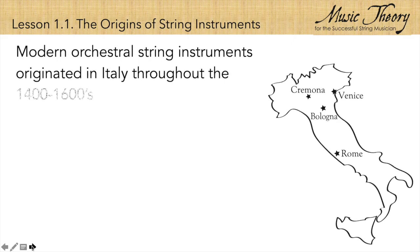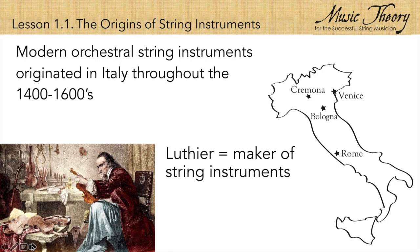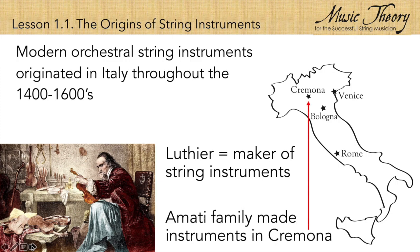Modern orchestral string instruments originated in Italy throughout the 14th through 1600s. They were made by artisans known as luthiers, who spent their lives working to develop and improve the design of these string instruments. One of the most important artisan families was the Amati family, and they made their instruments in Cremona for over a century.